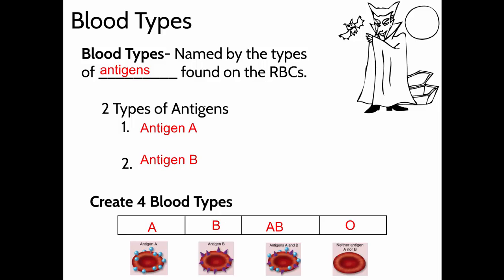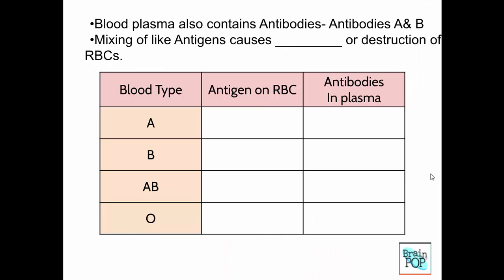We inherit our blood type from our parents — your blood type is genetic. Someone with AB blood can receive blood transfusions from anyone. Inside our blood, as part of our immune system, we have antibodies that help fight off foreign cells, and that's where blood typing becomes important. Because if a person has A antigens on their red blood cells and their bloodstream also has antibodies that attack those A antigens, those antibodies clump up the blood cells and the blood cells no longer work. It leads to damage to blood cells called hemolysis.